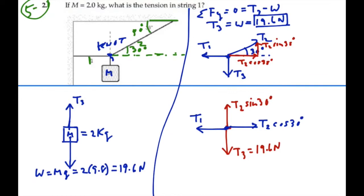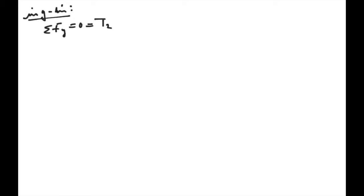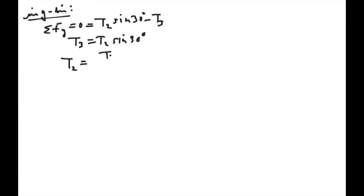The knot is not moving. In the y direction, the summation of all forces must be equal to zero. We have T2 sine 30 going up and all of tension 3 going down. So tension 3 equals T2 sine 30, which means tension 2 equals tension 3 divided by sine 30. That would be 19.6 divided by one half, which gives us 39.2 Newtons. So that is tension 2.